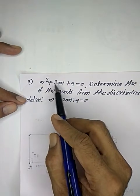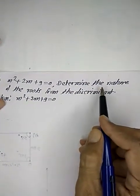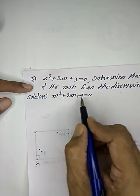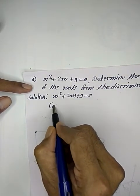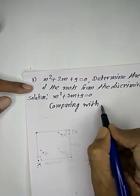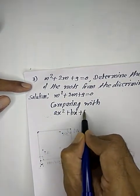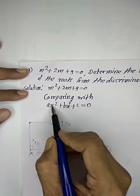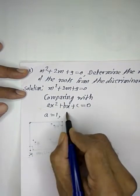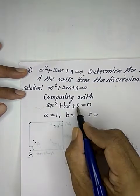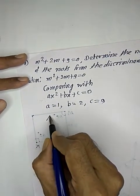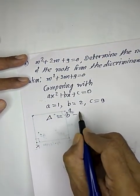Third example: m² + 2m + 9 = 0. Determine the nature of the roots from the discriminant. Solution: m² + 2m + 9 = 0. Comparing with ax² + bx + c = 0, the square term's coefficient a is equal to 1, b is equal to 2, and c constant term is equal to 9.